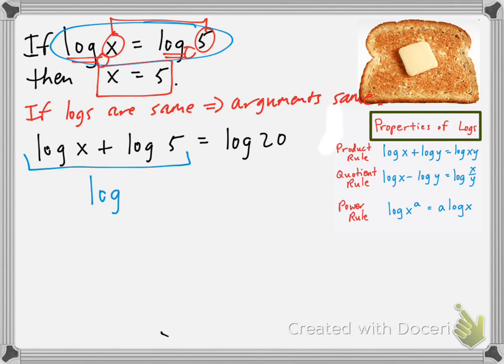So the log of x plus log of 5 is the log of x times 5. Or you could write it as 5x equals the log of 20. And then, therefore, we have, since the bases are the same, bases are the same, we have log on each side, base 10.